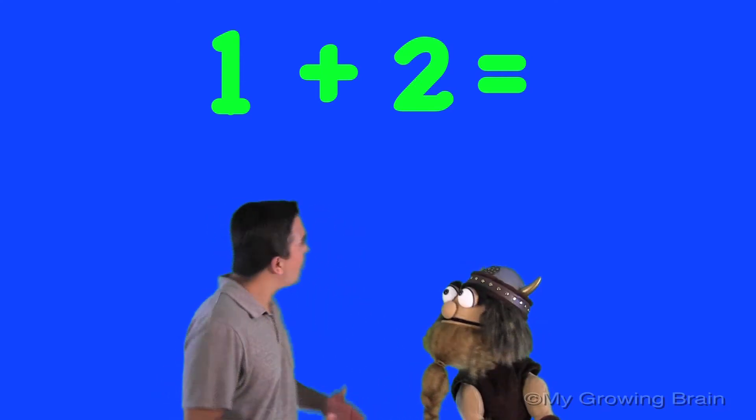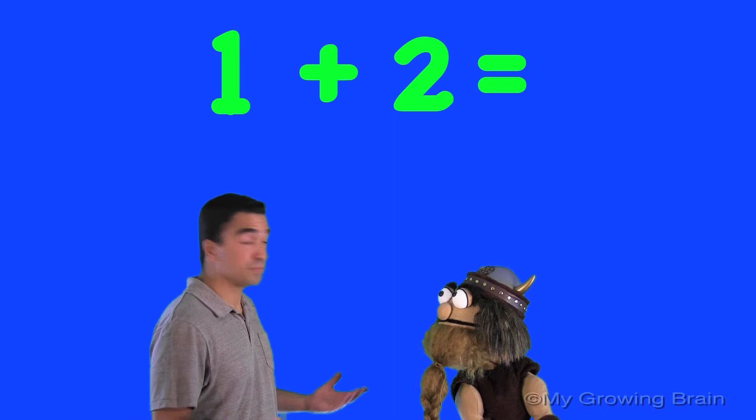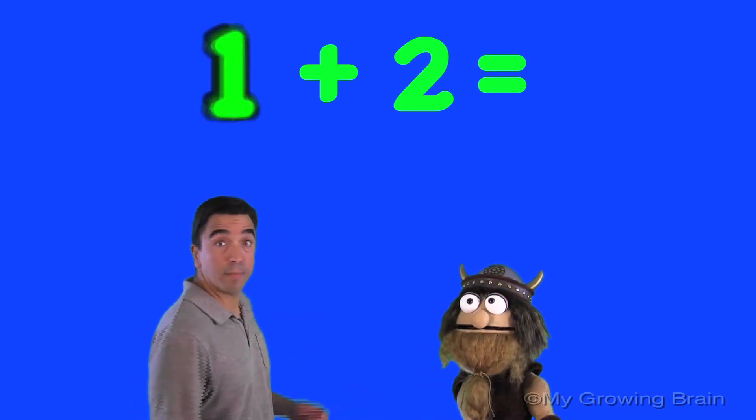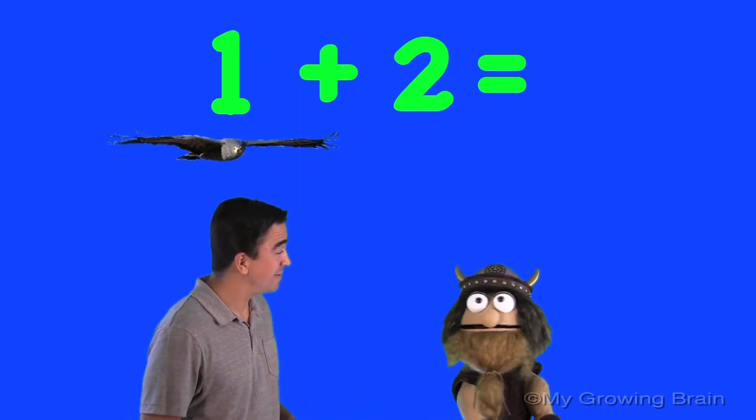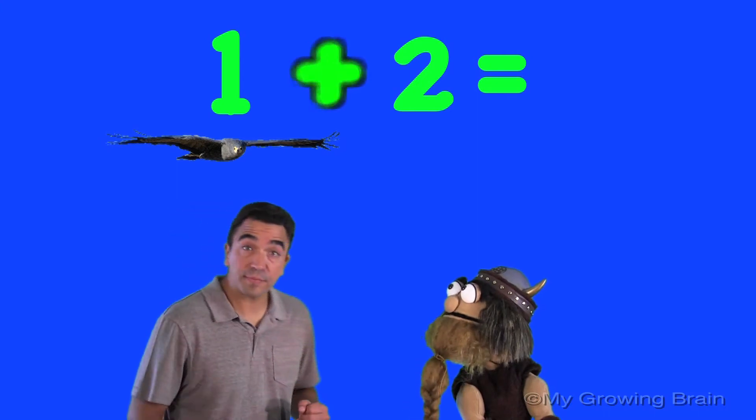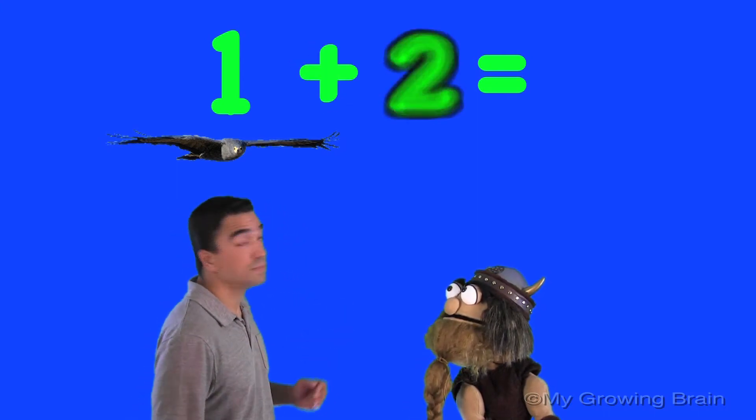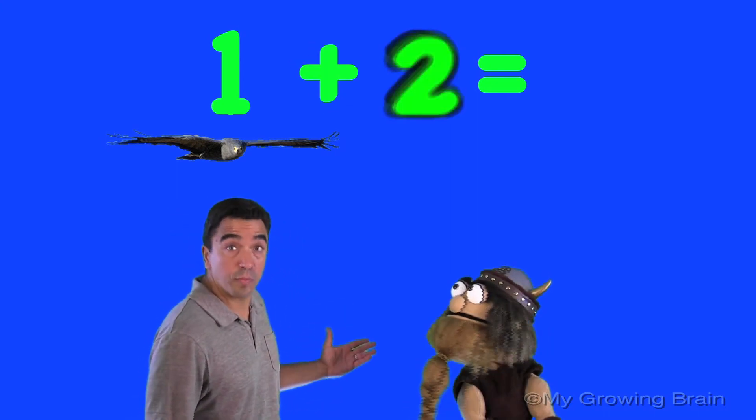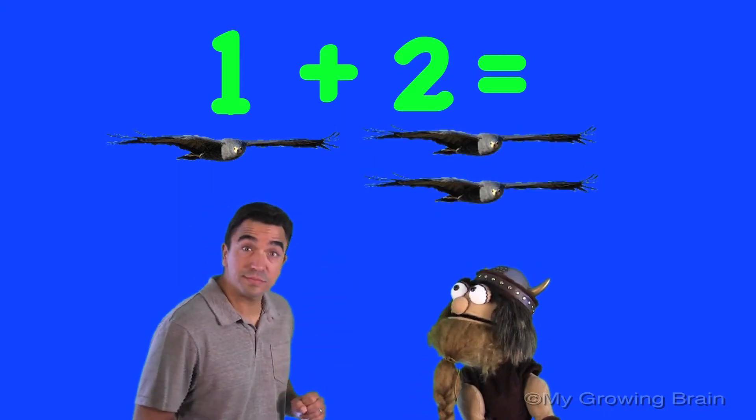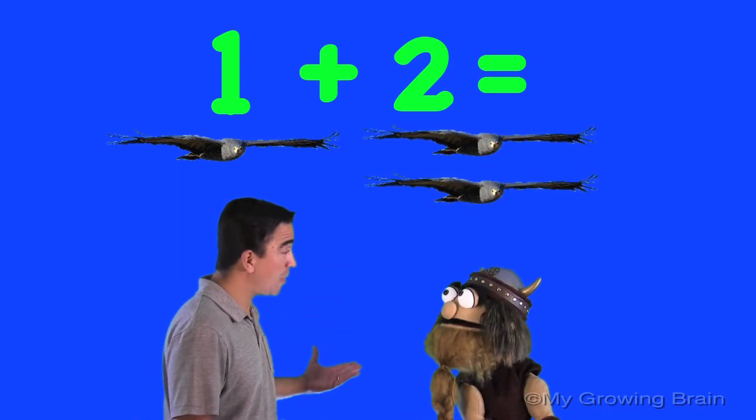Alright. Well, we have 1. Like, how about 1 bird. Oh, okay, Coach Mac. 1 bird. Plus 2. 2 birds. 1, 2. Oh, okay, Coach Mac. Now what happens?